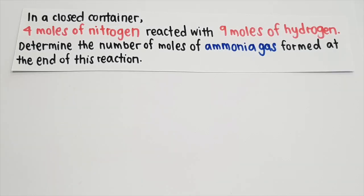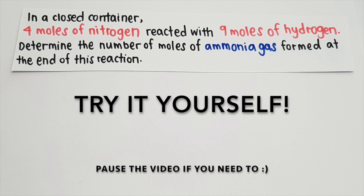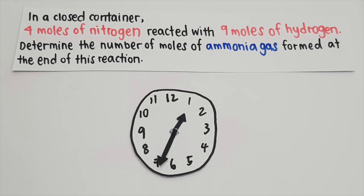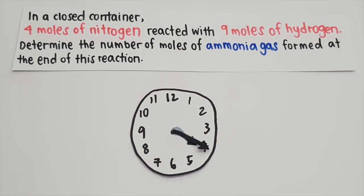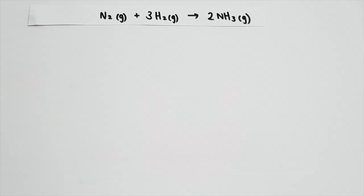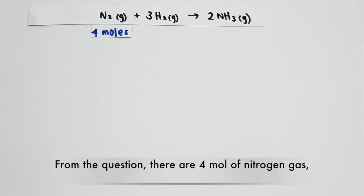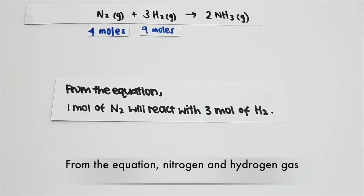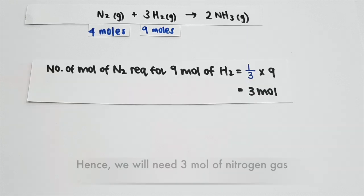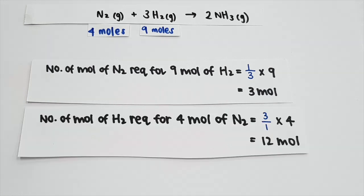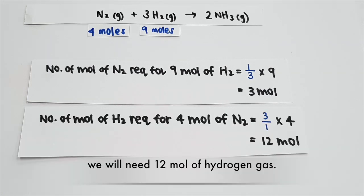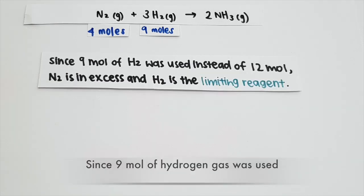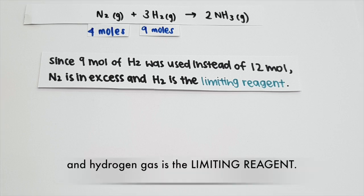Let's try more questions. In a closed container, four moles of nitrogen gas reacted with nine moles of hydrogen gas. Determine the number of moles of ammonia gas formed at the end of this reaction. Remember, we will need a balanced chemical equation before making comparisons with the actual mole ratio. From the question, there are four moles of nitrogen gas and nine moles of hydrogen gas. From the equation, nitrogen and hydrogen gas react in a ratio of 1:3. Hence, we will need three moles of nitrogen gas for nine moles of hydrogen gas. For four moles of nitrogen gas, we will need twelve moles of hydrogen gas. Since nine moles of hydrogen gas was used instead of twelve moles, nitrogen gas is in excess and hydrogen gas is the limiting reagent.